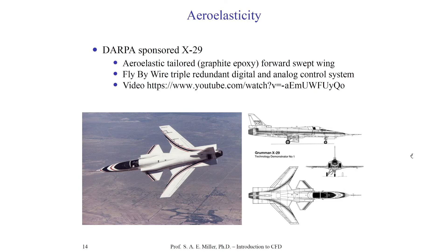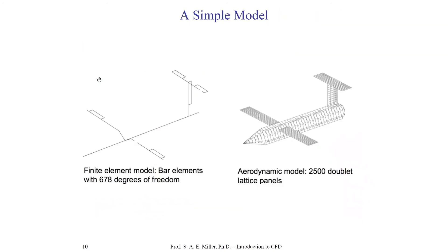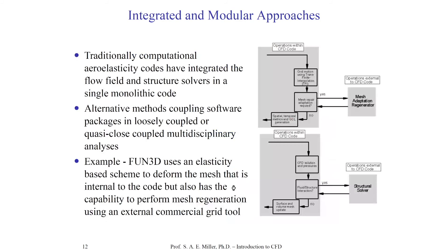There's also the famous DARPA X-29 program, which examined instability and stability of aircraft. The Grumman X-29 tech demonstrator featured a graphite-epoxy forward-swept wing, which is inherently a slightly unstable configuration. It had to use a fly-by-wire system to control the aircraft, as it's very unlikely the aircraft would remain stable without a computer system making corrections for the pilot. There are also videos of this beautiful aircraft available online. This vehicle had design elements from simple lattice paddle elements where CFD was coupled with bar elements for instability calculations.